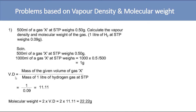Now calculate vapor density: vapor density = mass of 1 liter of gas X / mass of 1 liter of hydrogen at STP = 1 / 0.09 = 11.11. Vapor density has no unit; it is just a number. Molecular weight = 2 × vapor density = 2 × 11.11 = 22.22 grams.